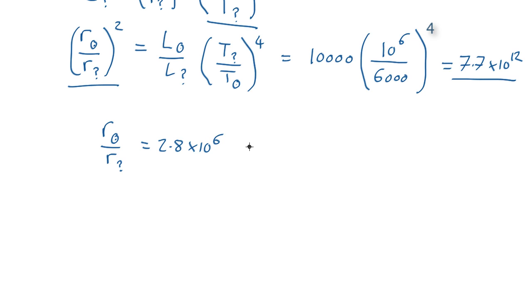So whatever this mystery object is, it's 2.8 million times smaller than the Sun. The radius of the Sun is about 695,000 kilometers. So we find that the radius of the mystery object equals the radius of the Sun over 2.8 by 10 to the 6. So that's 695,000 kilometers over 2.8 million, which comes out as 0.25 kilometers, 250 meters.